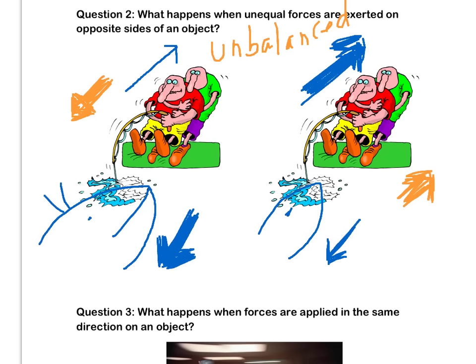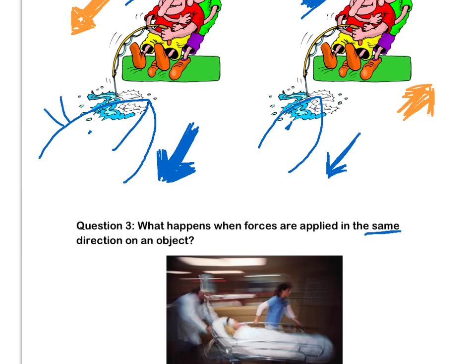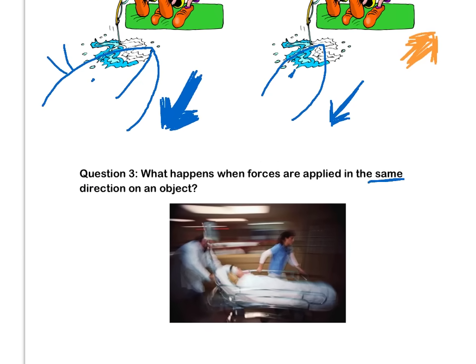Now let's look at our third and final question. Question three says, what happens when forces are applied in the same direction on an object? Let's look at our picture here. So we have a picture in a hospital and we have two medical professionals and both are exerting a force. We have one person exerting a force in this direction and we have another person exerting force in that direction.